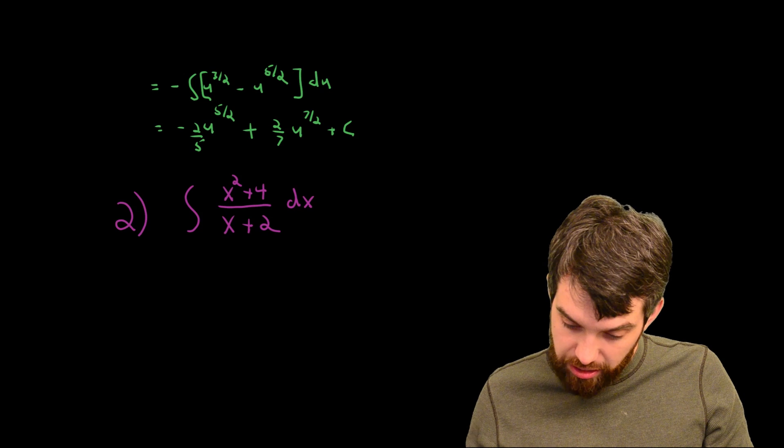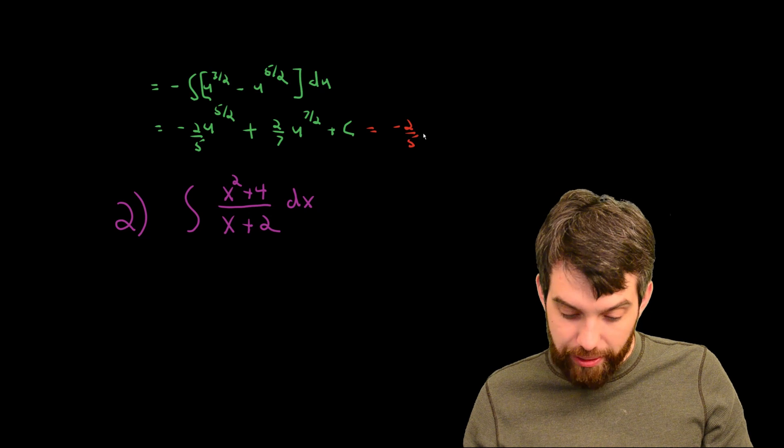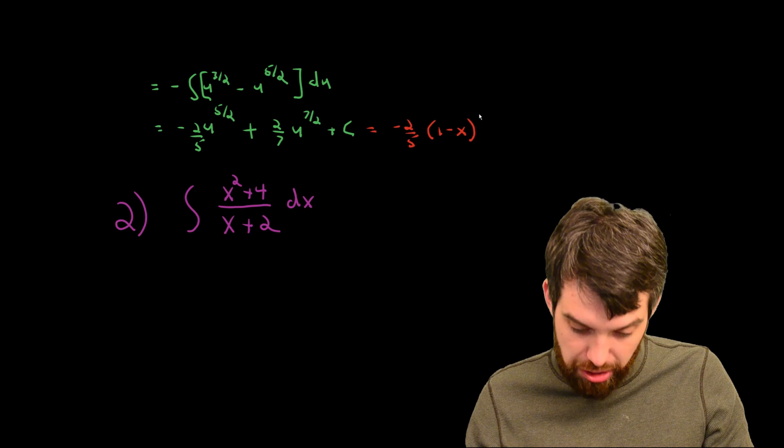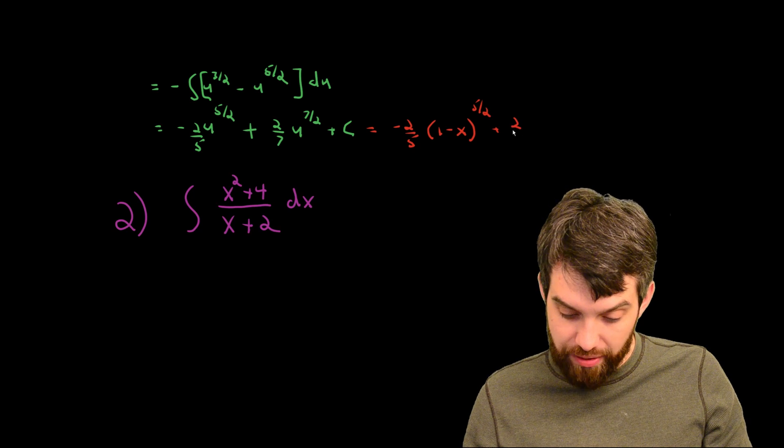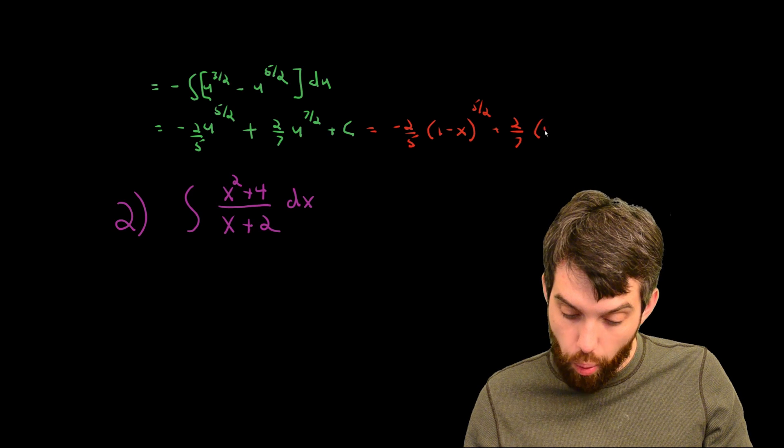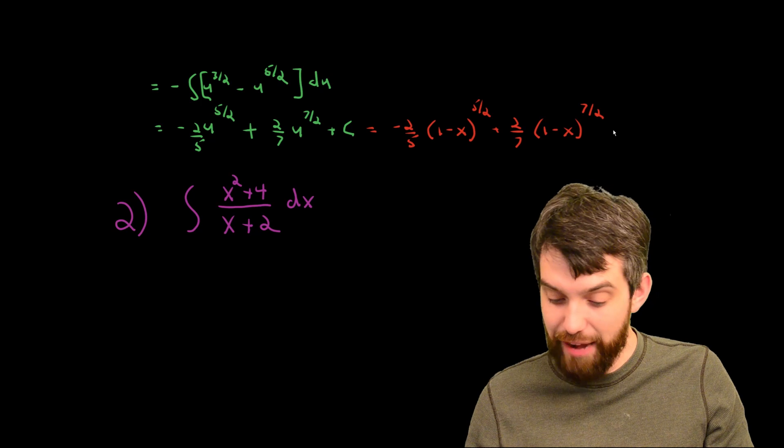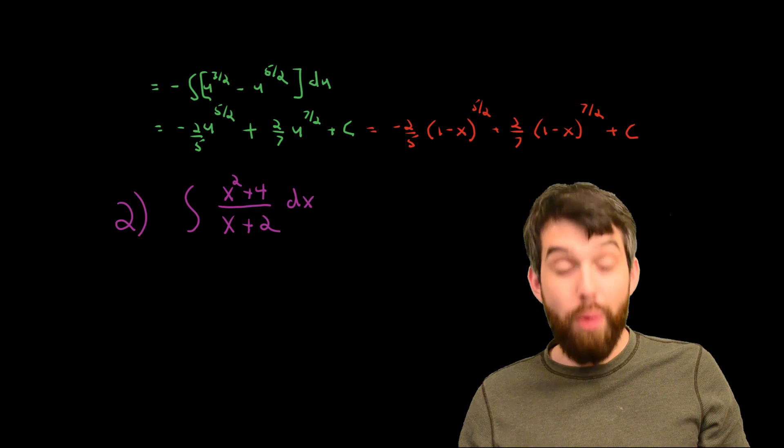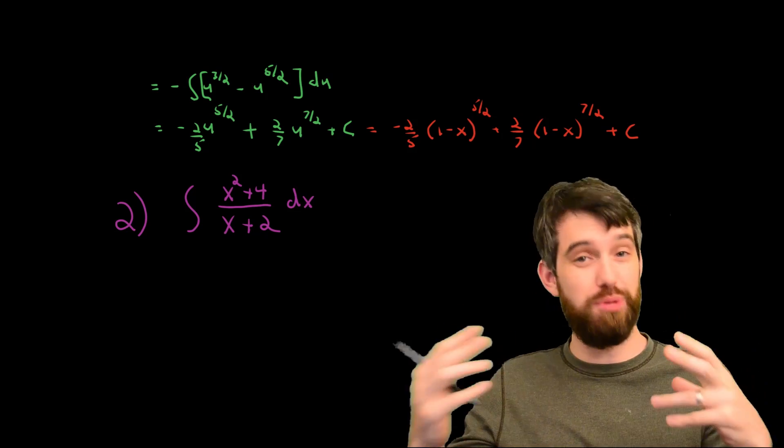And what am I going to get? This is going to be equal to minus 2 fifths. And in place of u, I put in the 1 minus x, which was our definition of u, to the 5 halves. And then 2 sevenths. And in place of u, I put in 1 minus x to the 7 halves. And finally, the all important plus c.